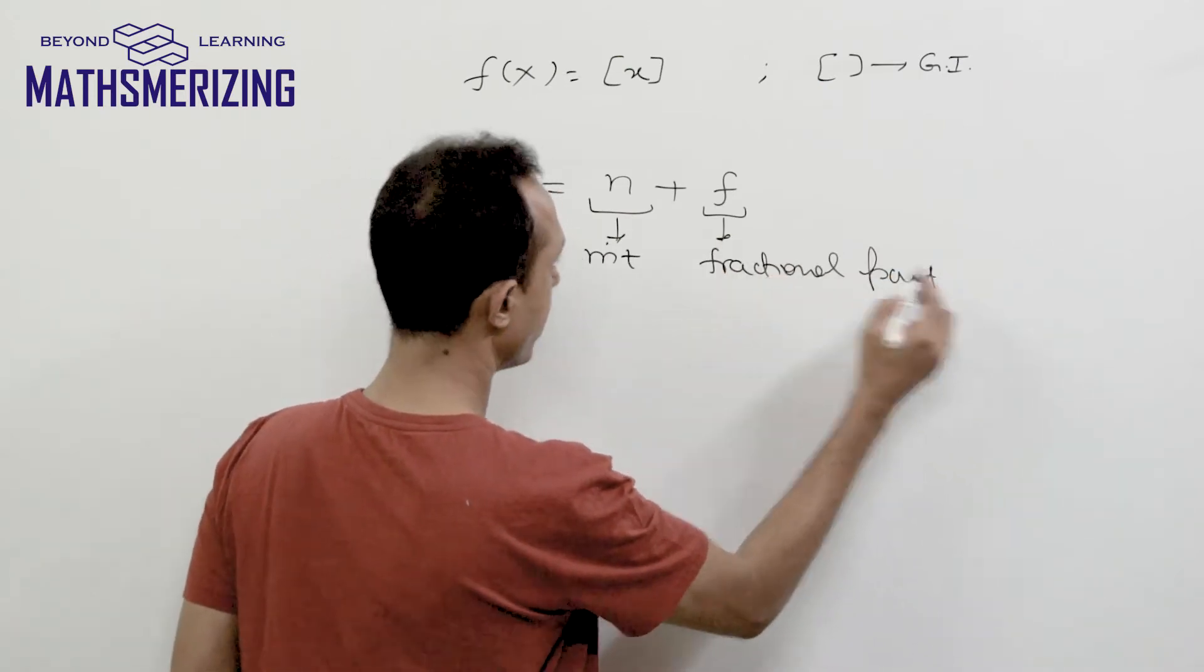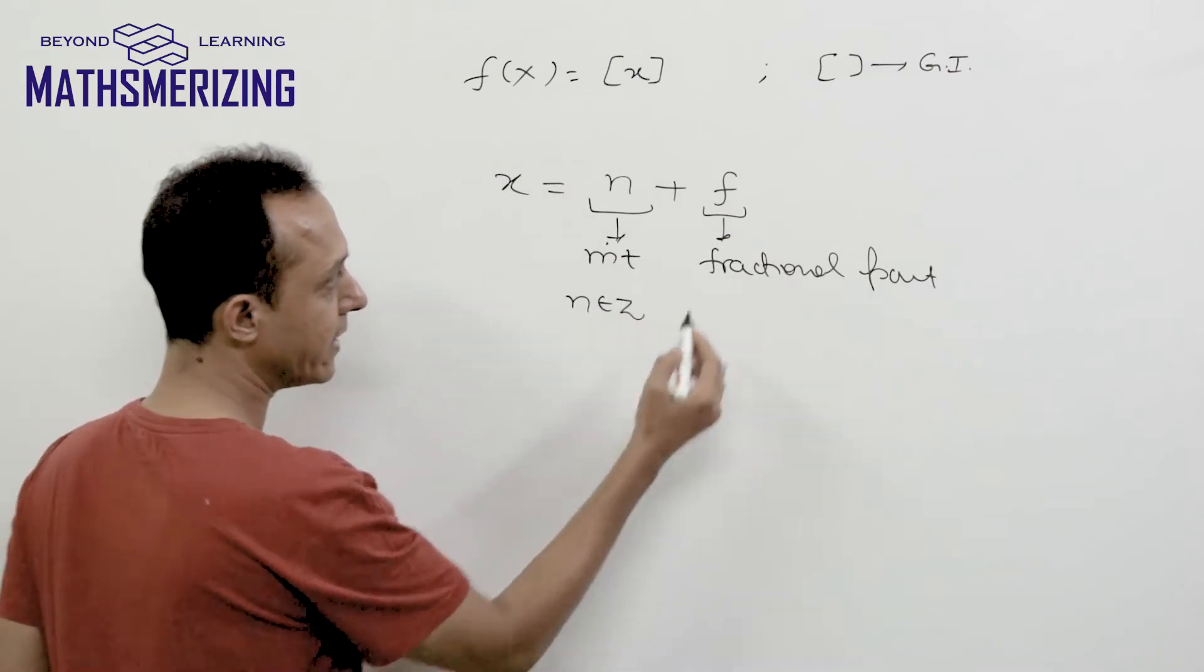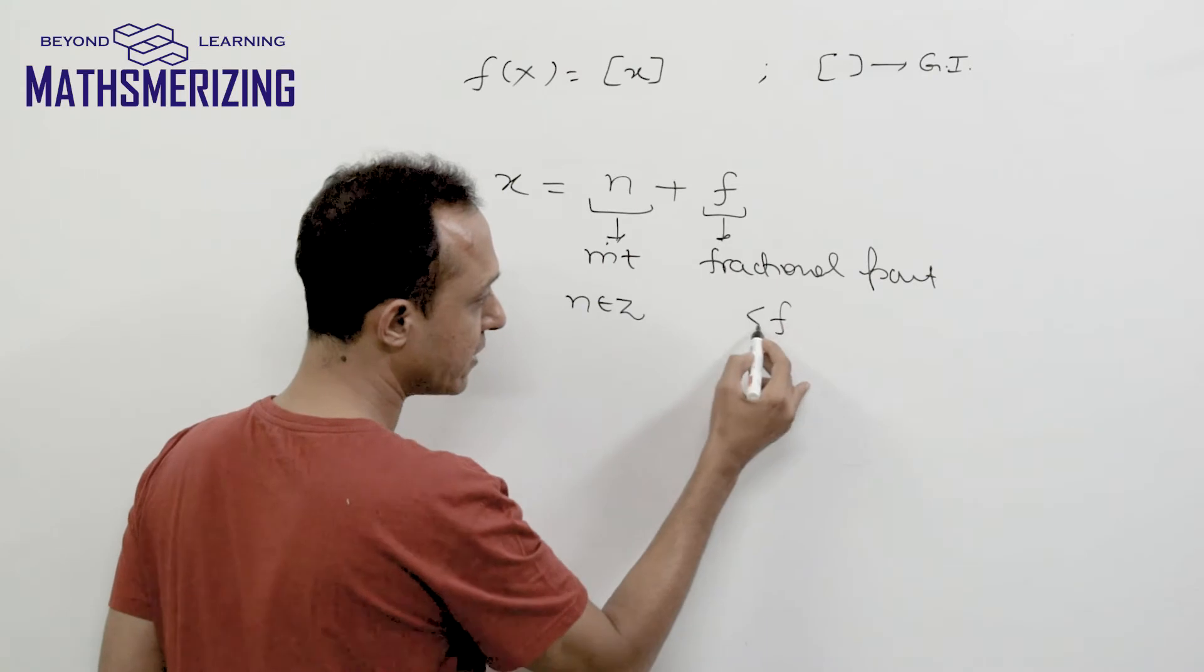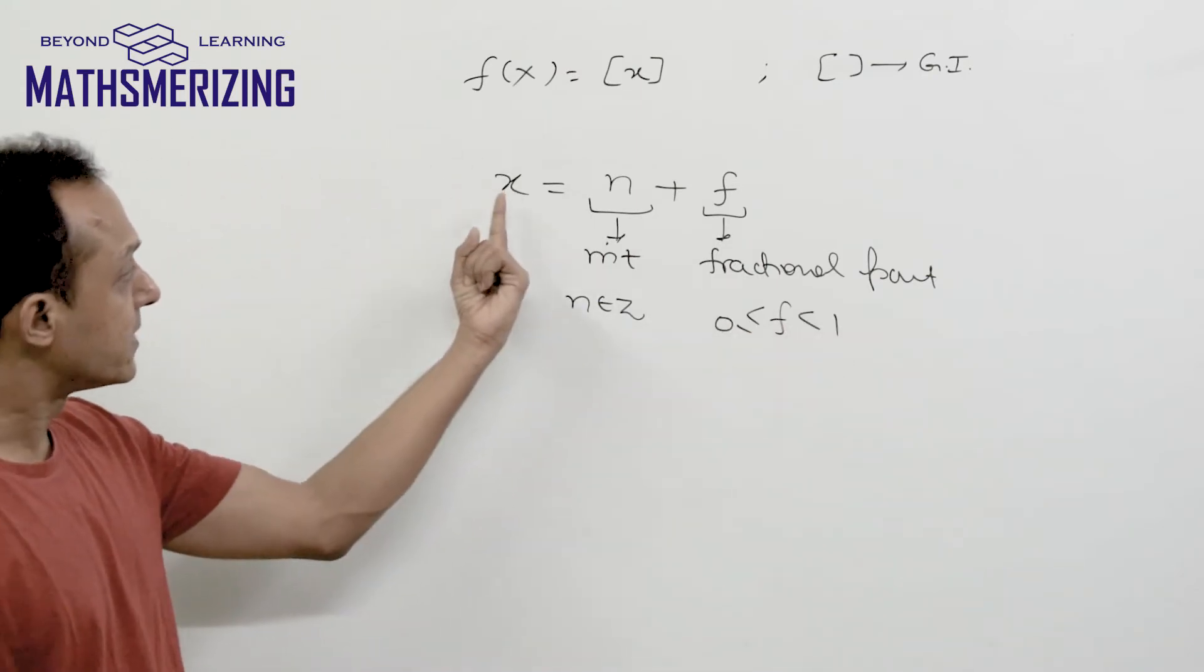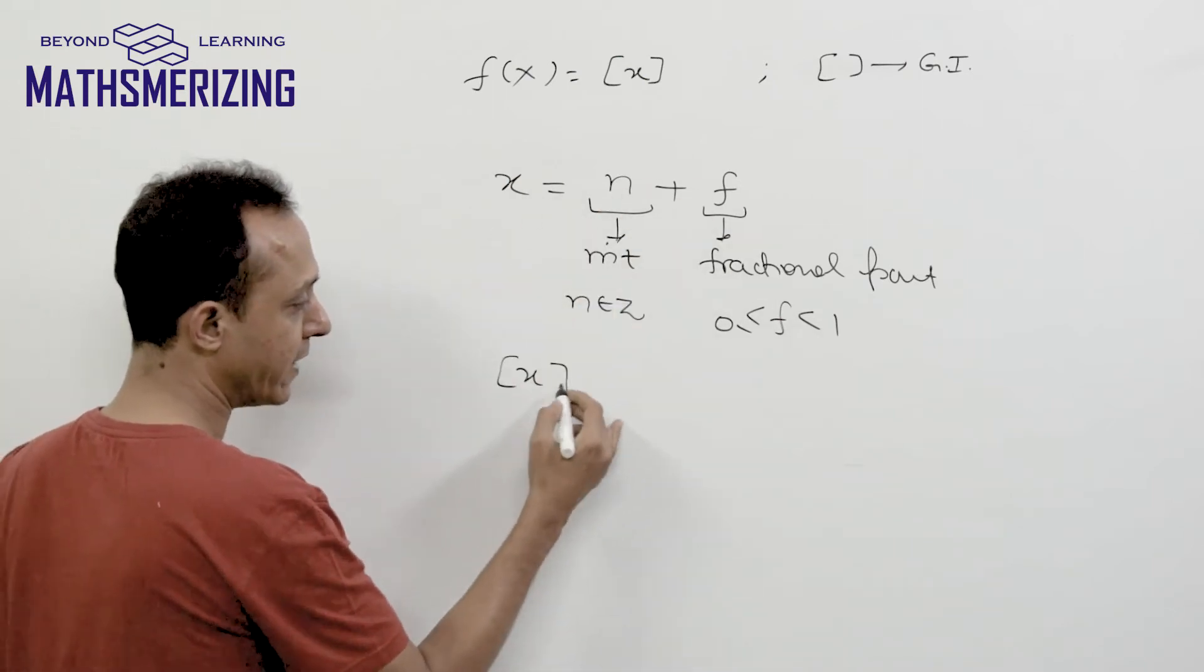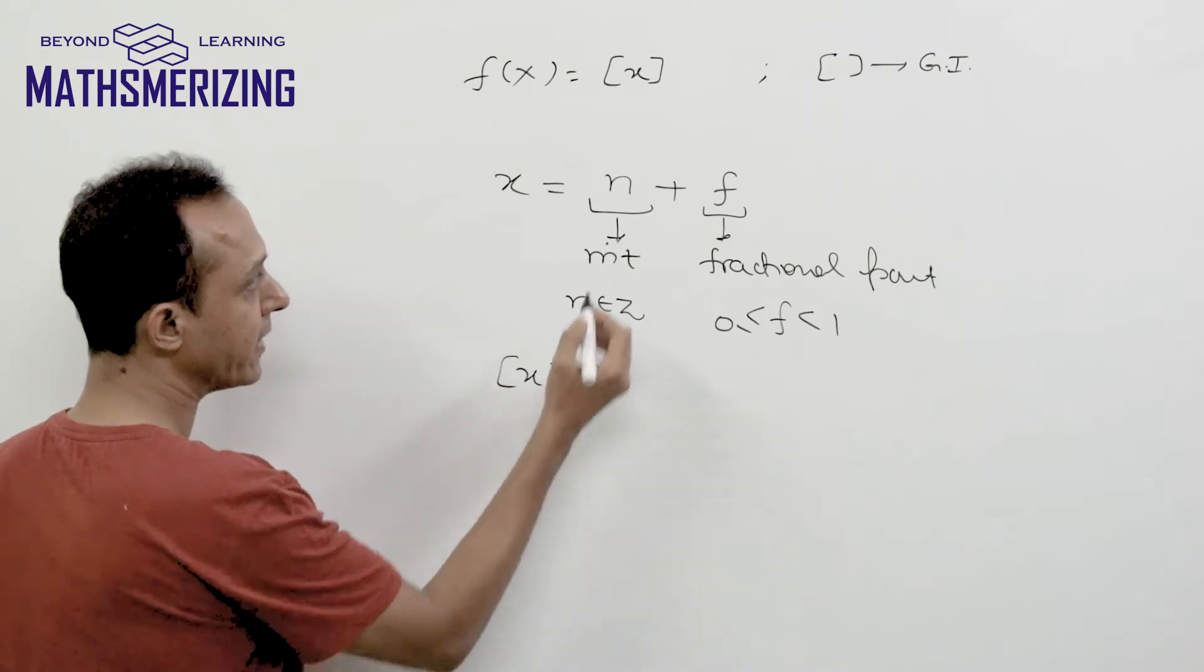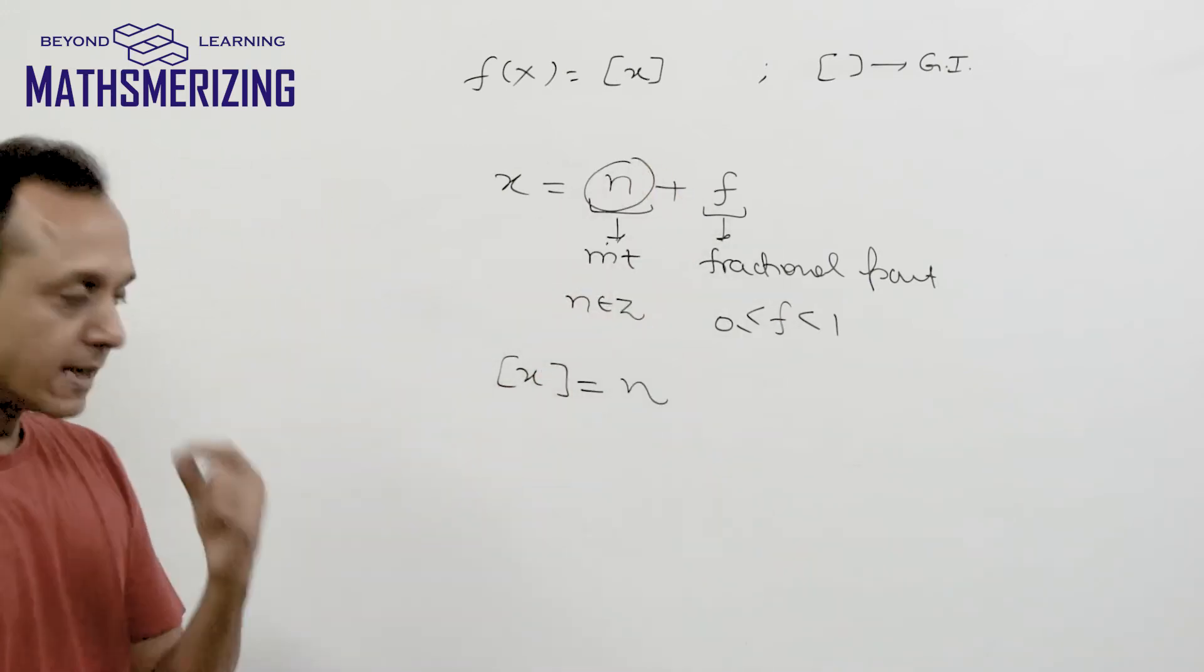So this n is its integral part and f is its fractional part. This n should be an integer, so n belongs to Z, and f being a fraction should lie between 0 and 1. When I express this number x as n plus f and take greatest integer function of x, it will give me its integral part, which is n.